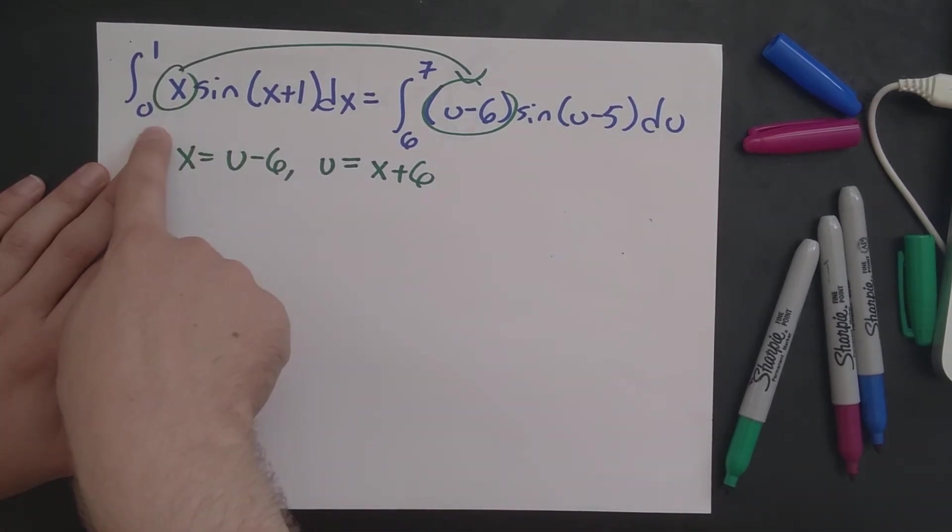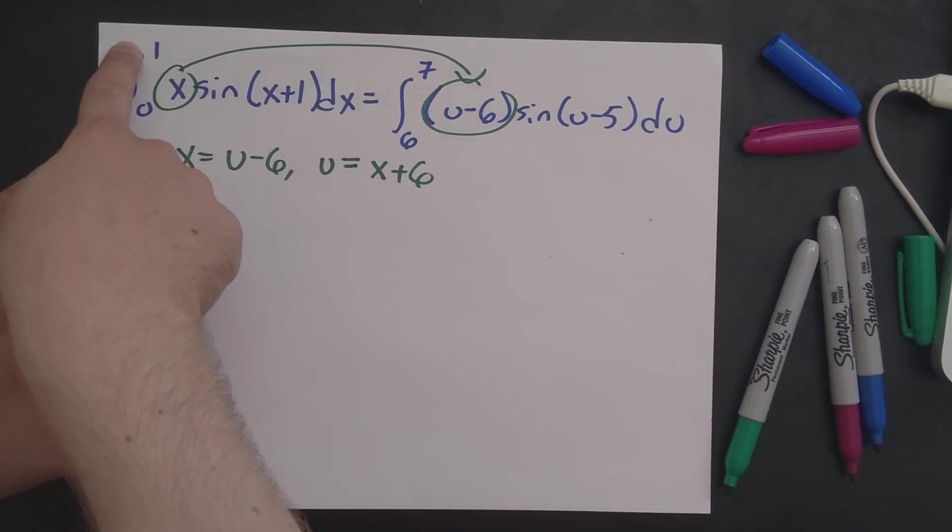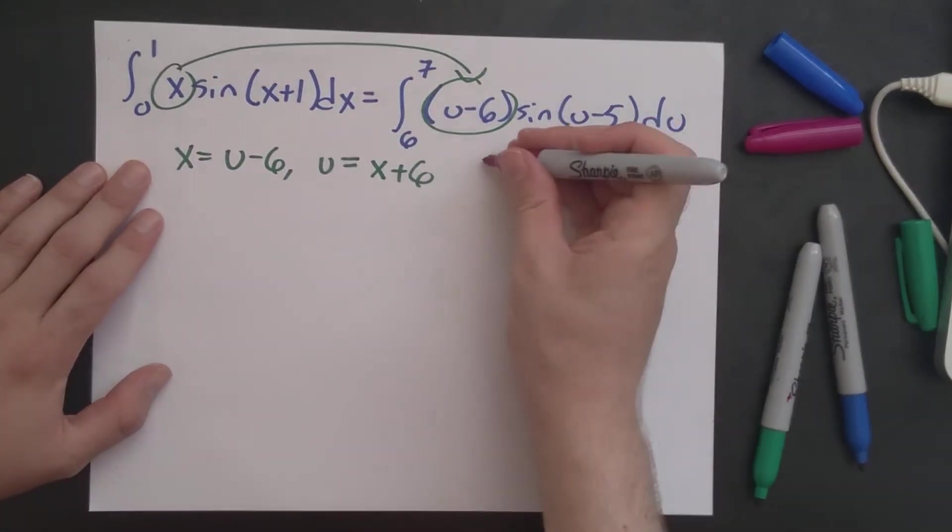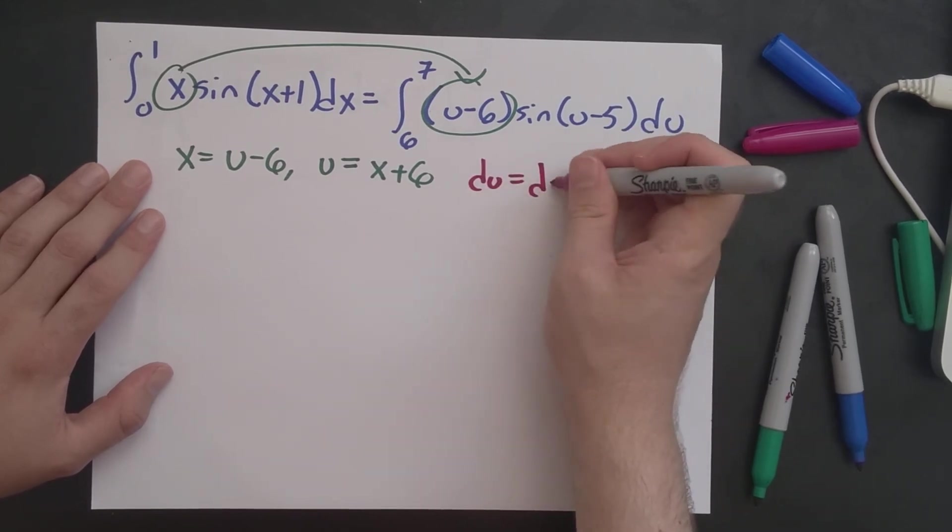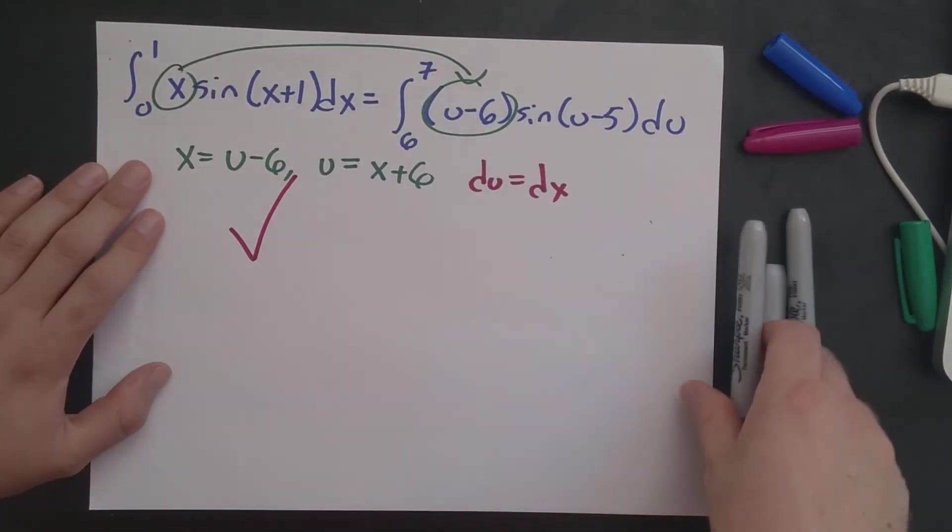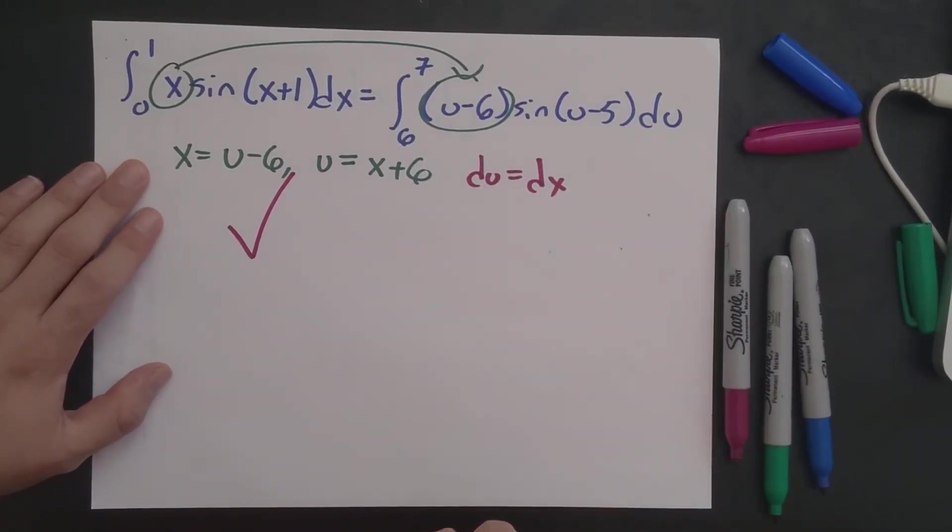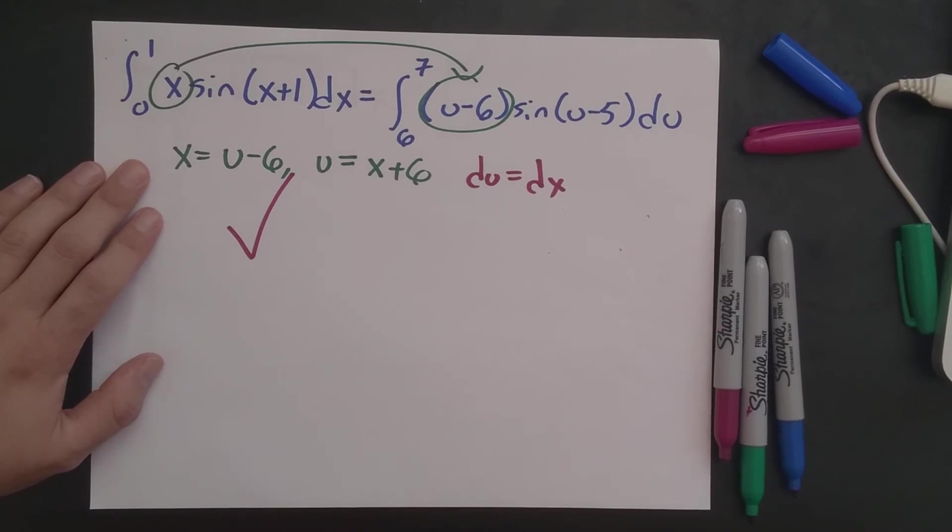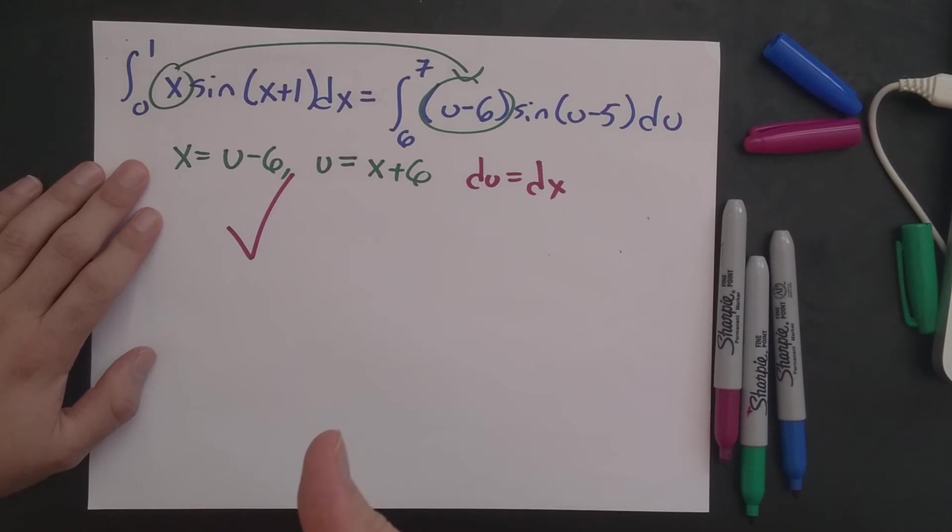When x is 0, u is 0 plus 6 is 6. When x is 1, u is 1 plus 6 is 7, so the bounds check out right. And du is equal to dx, so we can make that replacement. So this is a legitimate substitution. This is a perfectly fair application of our substitution theorems here. It's just not getting us closer to the final answer. So this is a true statement, it just isn't necessarily a helpful one.